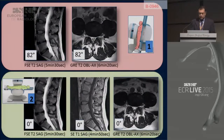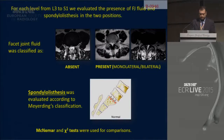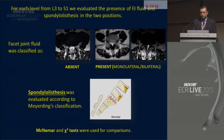We performed the upright position before the supine position in order to avoid syncopal episodes. Here you can see the total time of the examination. For each level from L3 to S1, we evaluated the presence of facet joint fluid and spondylolisthesis in the two positions.